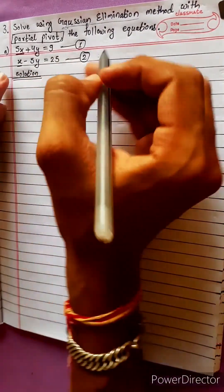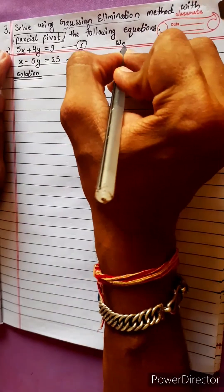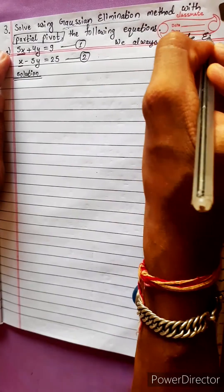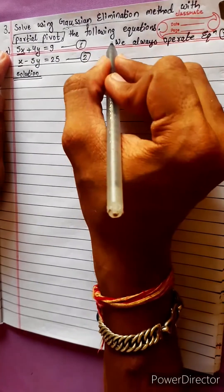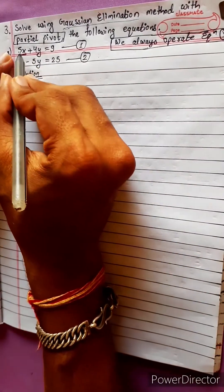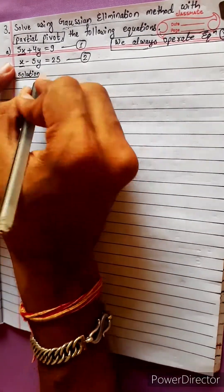In partial pivot method, we always operate on equation 1. We need to operate on equation 1 to arrange equations 1 and 2.